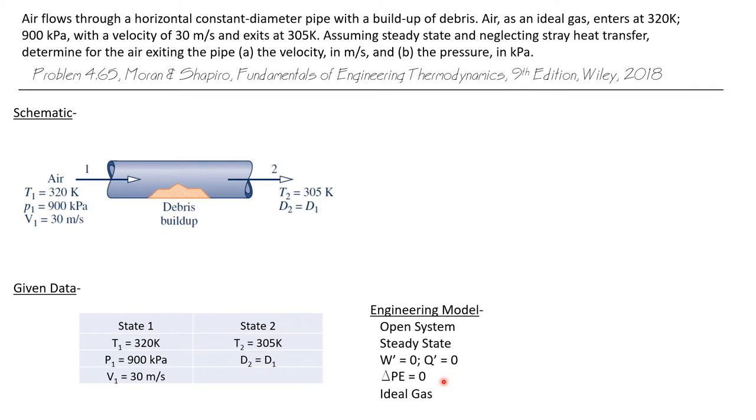And because we have air flowing through a horizontal pipe, we'll take the change of potential energy to be zero and we will treat the air as an ideal gas. We need to find the velocity and the pressure at the exit.